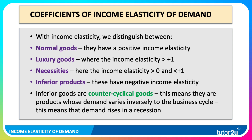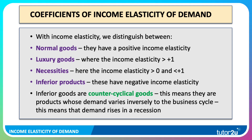With income elasticity we make a distinction between normal and inferior products, and between normal luxuries and normal necessities. All normal goods have a positive income elasticity, or YED for short. With luxury goods the income elasticity is strongly positive — the coefficient is greater than plus one. For example, a 10% rise in income might lead to a 20% increase in quantity demanded, giving a YED of plus two.